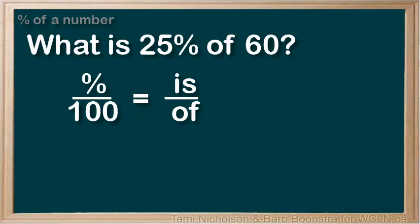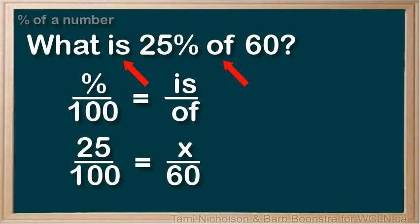Now, to solve the following problem: what is 25% of 60? Notice the is and of in the problem. Set up the ratio as 25 over 100 equals x over 60.